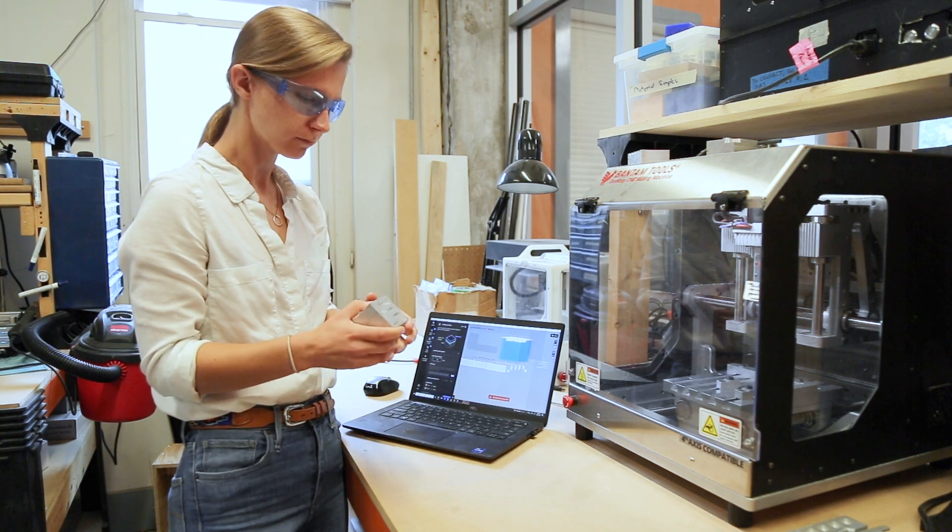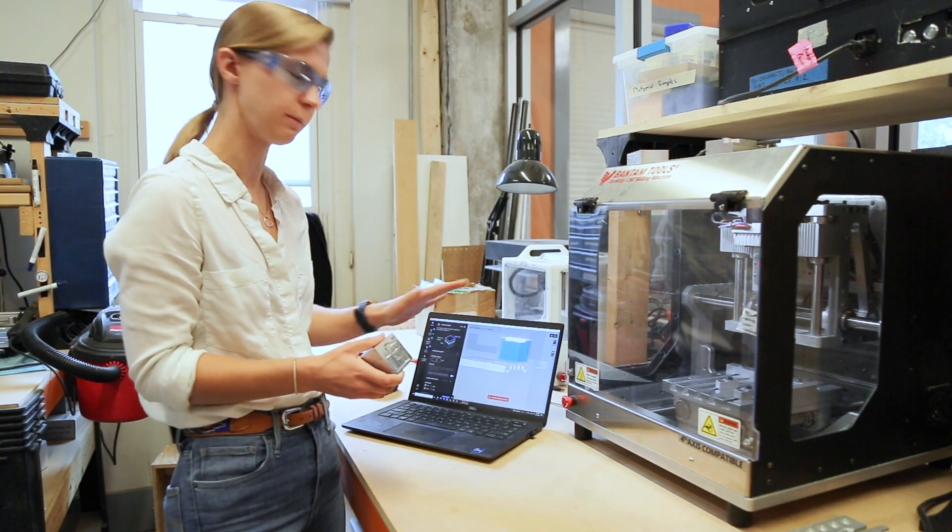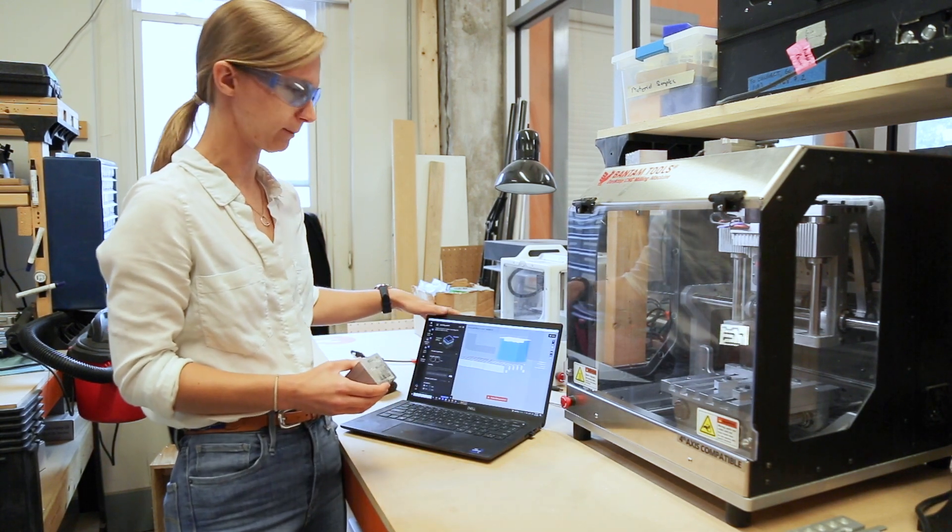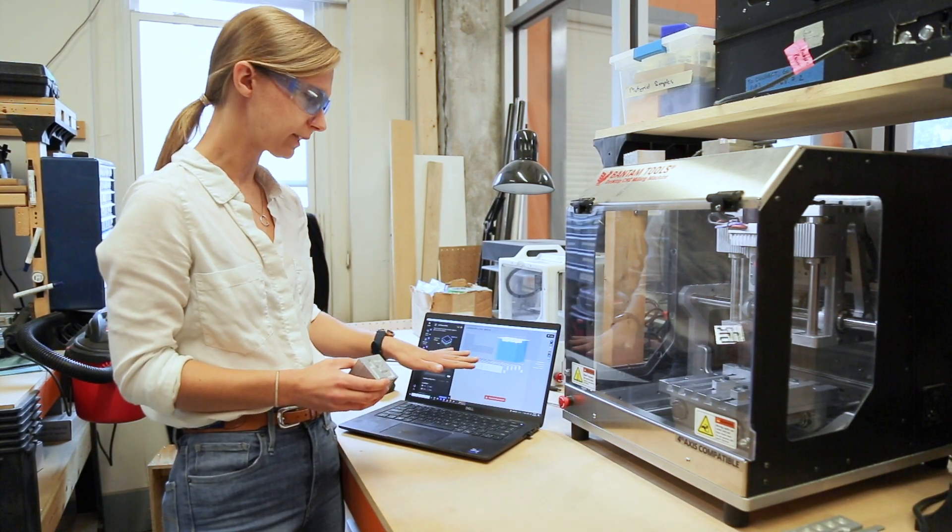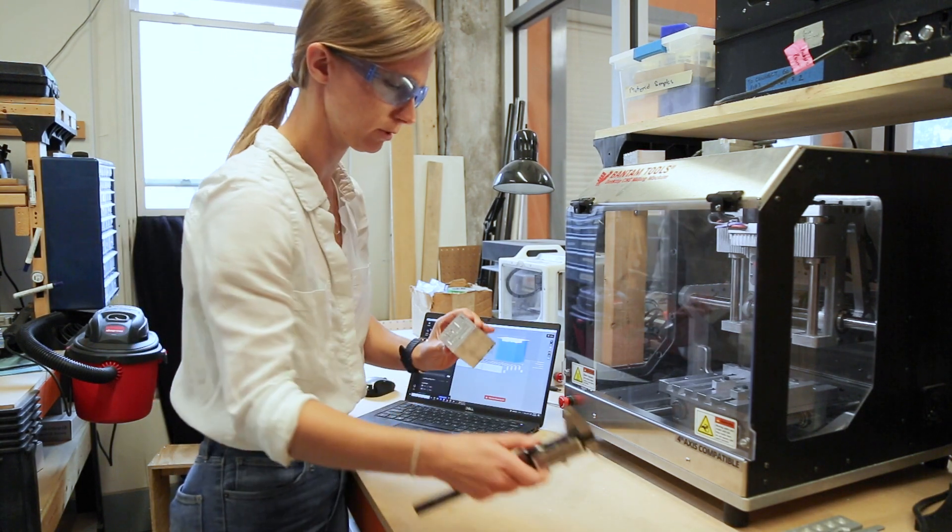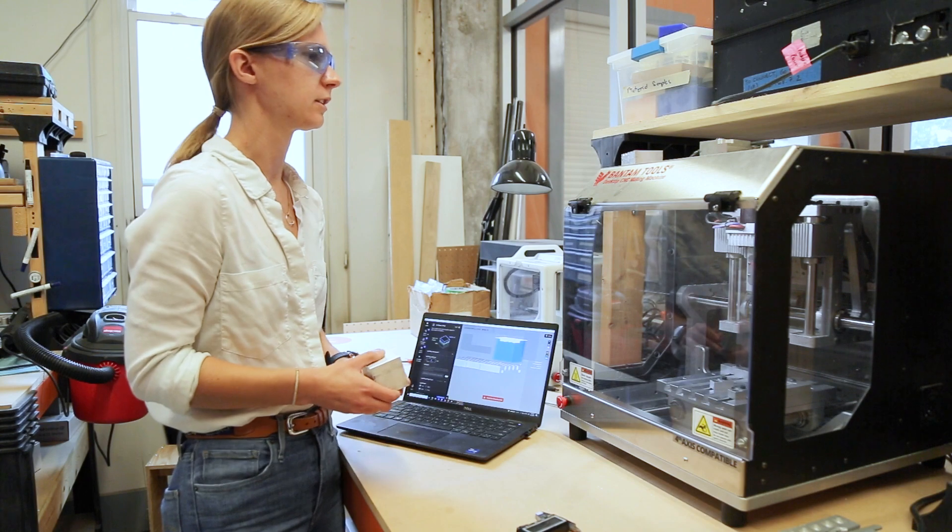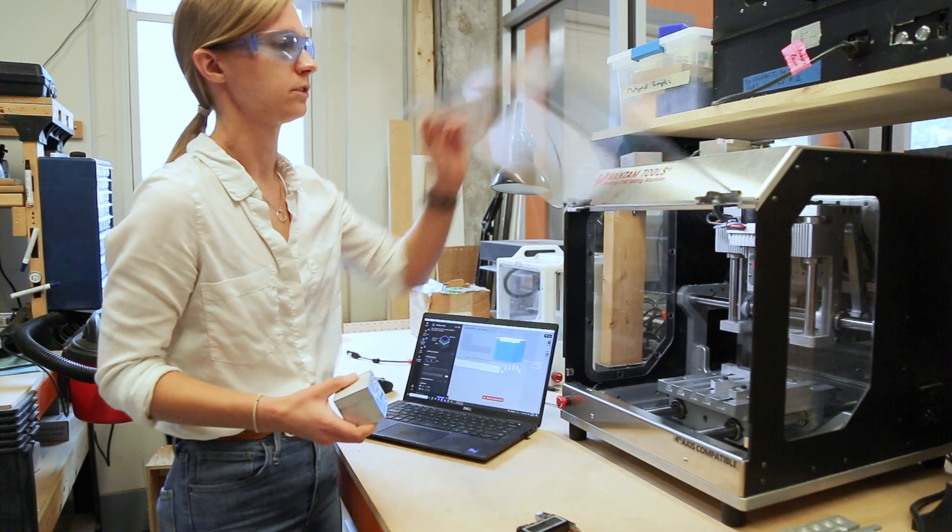I've already done some of the basics, so I made the tool paths in Fusion and brought them into the Bantam software, so everything is mostly set up. I measured our stock, so I took some caliper measurements so I know exactly what size this block is, and now we're gonna start installing.